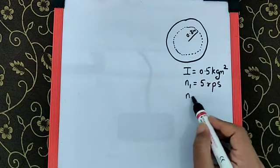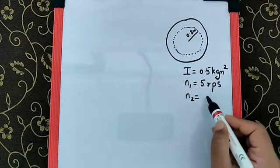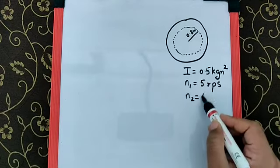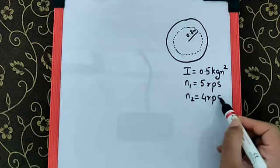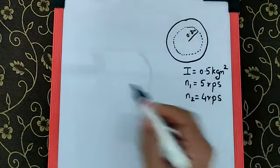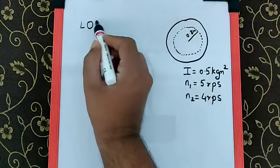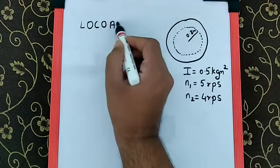We can say, because of the sand, the rotations or the speed of rotation decreases to 4 rps. So, again we can use something called as law of conservation of angular momentum.